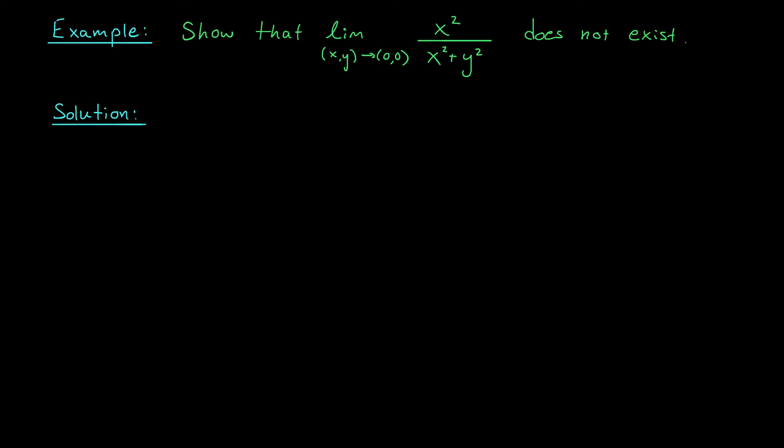As a first example, let's use what we've just discussed to show that this limit, the limit as (x,y) approaches (0,0) of x² over x² plus y² does not exist. Now note that this function, x² over x² plus y², is not defined at (0,0), because we would be dividing by 0 there. But that's okay. The limit doesn't care what the function is doing at (0,0). It just cares what the function is doing near (0,0).